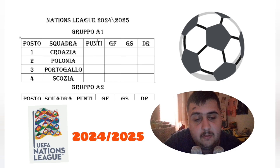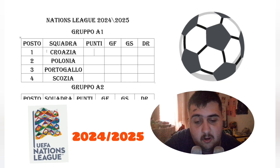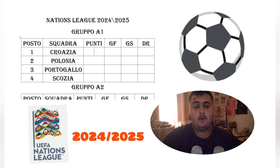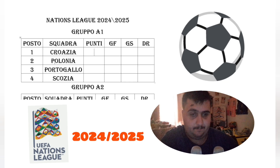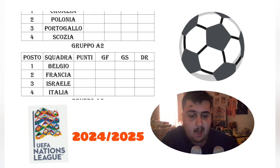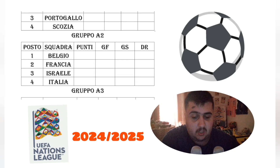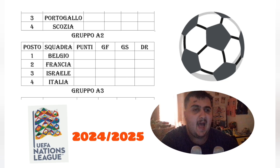Let's start from Group A1, which has Croatia, Poland, Portugal and Scotland. Group A2 has Belgium, France, Israel and Italy.